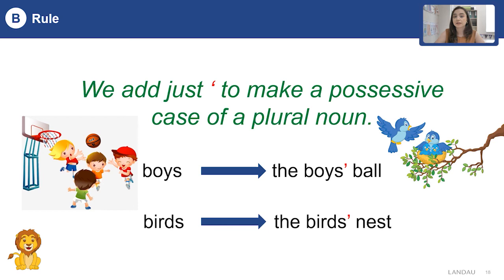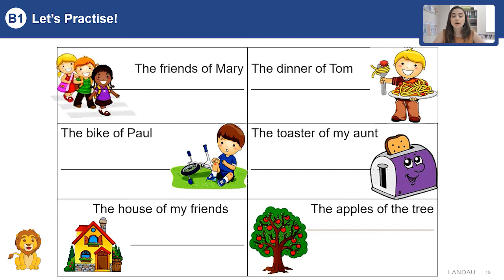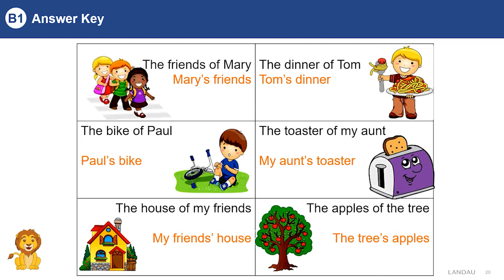Now it's time for practice. Please rewrite these sentences using the possessive case. Let's check your answers. The friends of Mary — Mary's friends. The dinner of Tom — Tom's dinner. The bike of Paul — Paul's bike. The toaster of my aunt — my aunt's toaster. The house of my friends — my friends' house. The apples of the tree — the tree's apples.